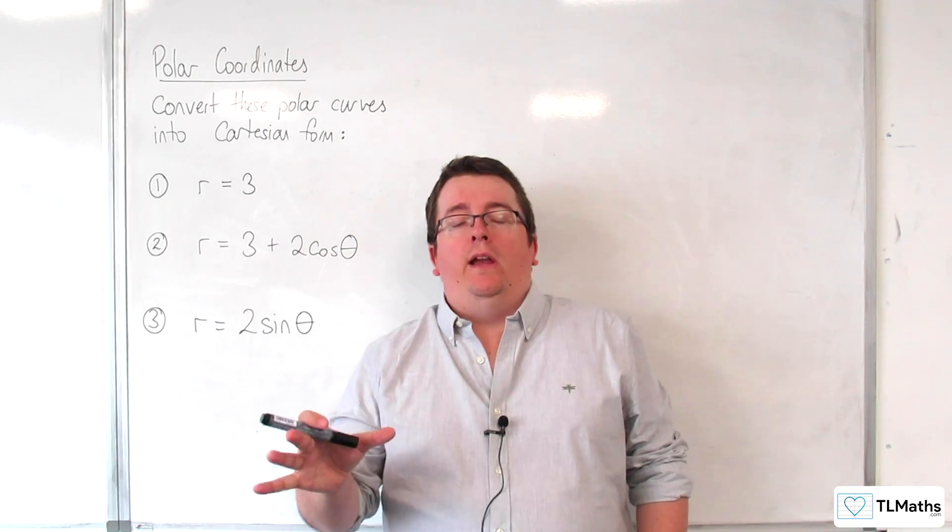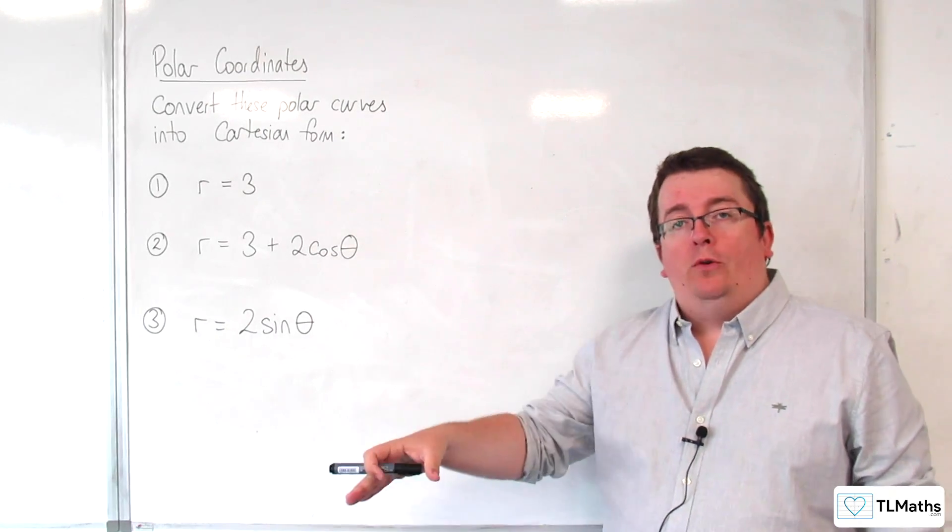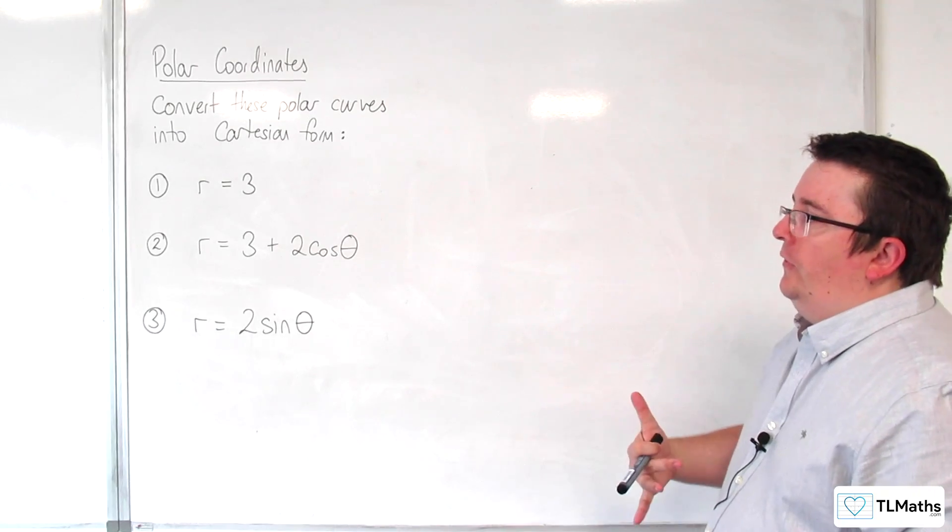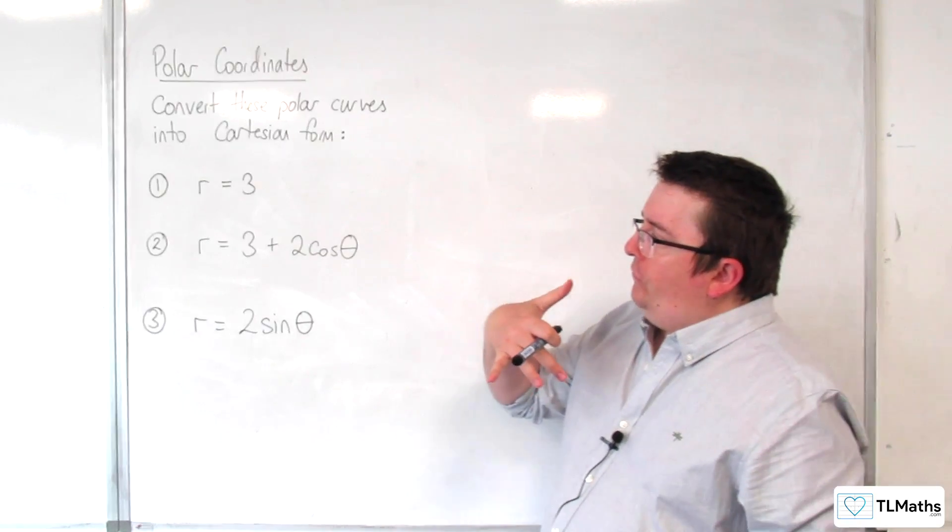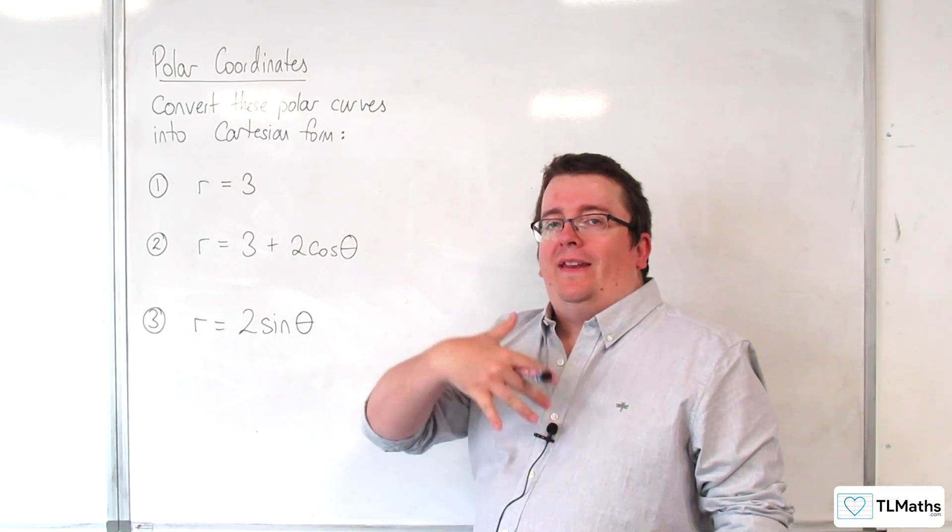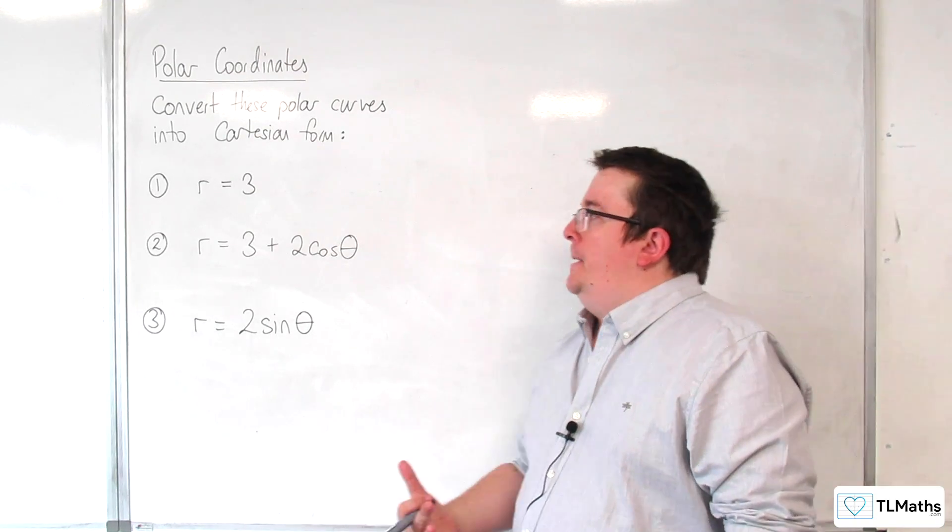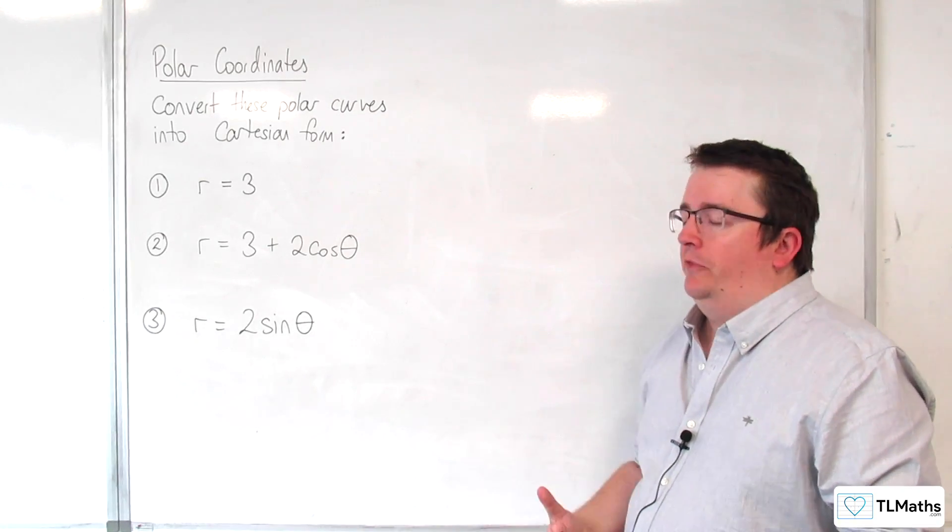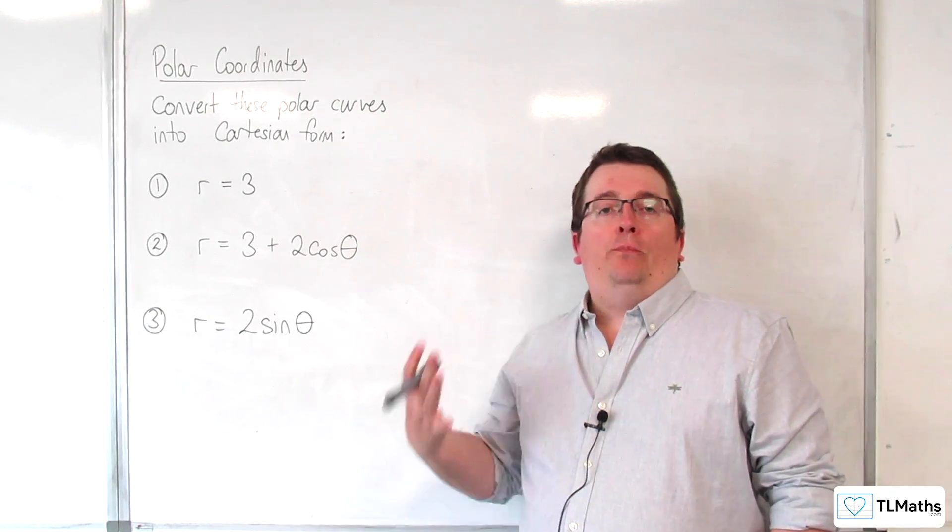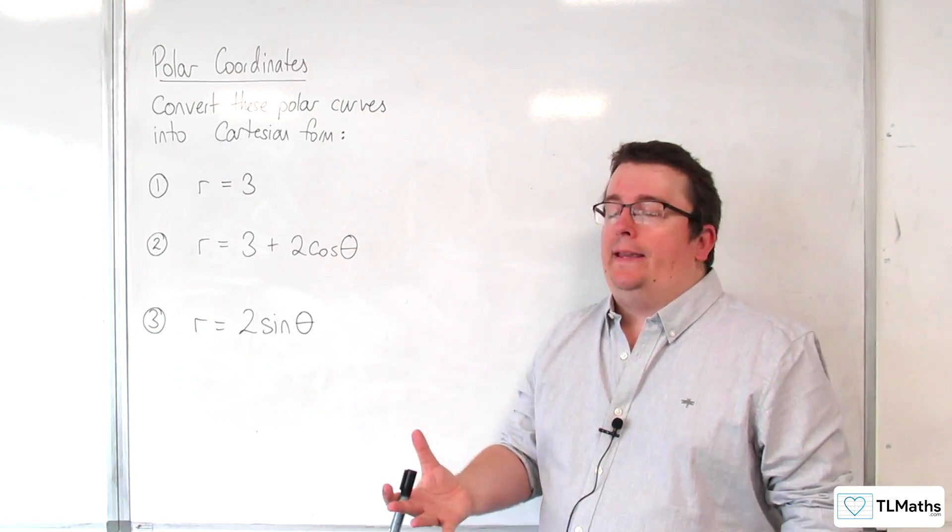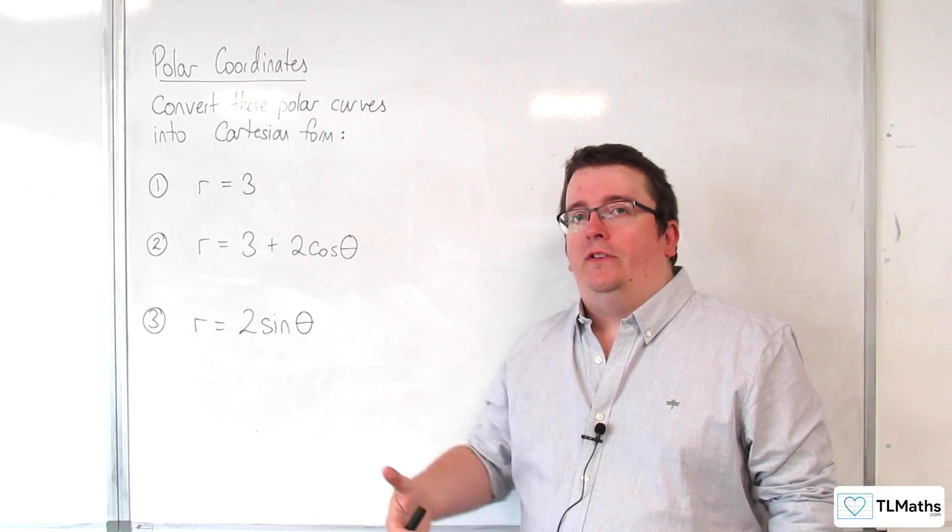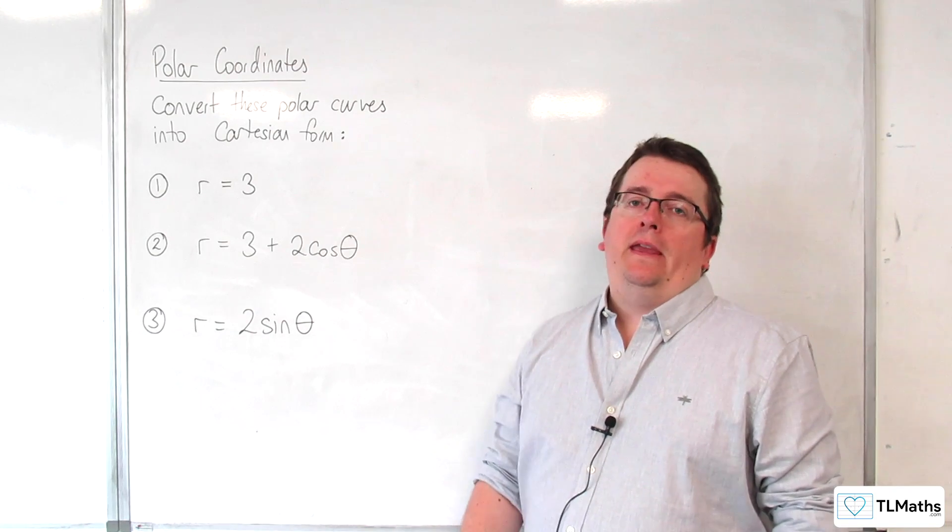In this video, we're going to look at how we can convert from polar form to Cartesian form. Really this is so that you can see that it can be done. There are a few issues that can arise from converting from polar form to Cartesian form, especially if you're expecting the negative part where if R takes on negative values, if you're expecting that to be included.